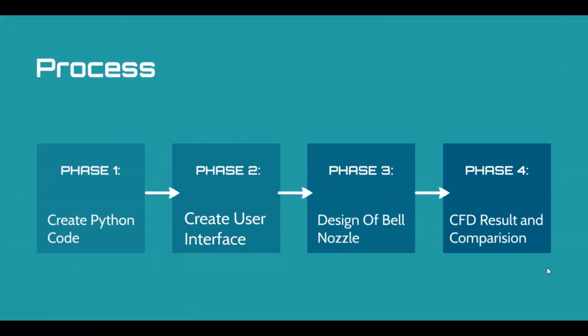In our project, we created a Python code which is used to design a bell nozzle based upon the user's input. Those coordinates can be imported into any CAD software to design a bell nozzle, and that can be further used in CFD processes and other purposes.